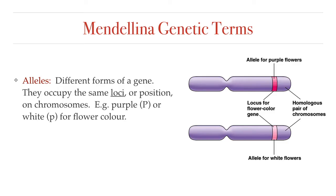Let's talk about some terminology. When Mendel talked about factors that control a trait, we're talking about genes. There are different forms for a gene, and those forms are called alleles. For example, for eye color, the alleles could be brown, blue, or green — those are the different forms of the trait. For the pea plant, the trait would be seed shape and the alleles would be smooth or wrinkled. Alleles occupy the same position on a chromosome, which we call the locus. So the gene for flower coloration is found on the exact same spot in the chromosome in all plants, but there could be different alleles — some might have the purple allele and some the white allele.